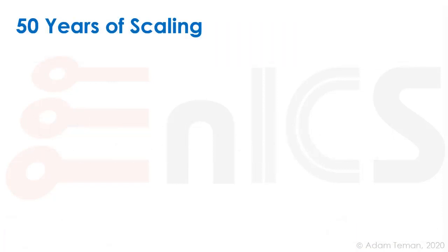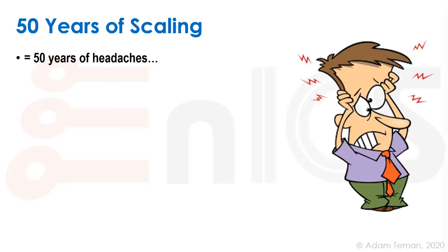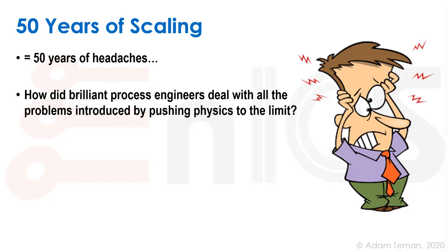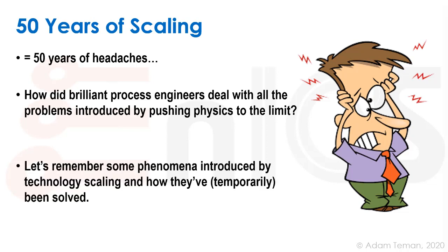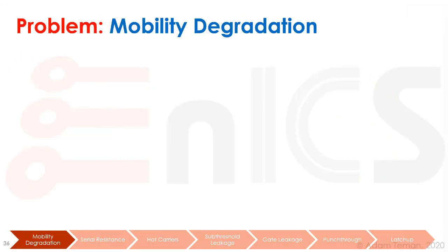So we've had at least 50 years of scaling, and 50 years of scaling equals 50 years of headaches. The question is, how did brilliant process engineers deal with all the problems introduced by pushing physics to the limit? Let's remember some of the phenomena introduced by technology scaling and see how they've temporarily at least been solved. I've divided this into several categories of problems — I'm going to remind us of the problem, what causes it briefly, and then discuss some of the solutions.